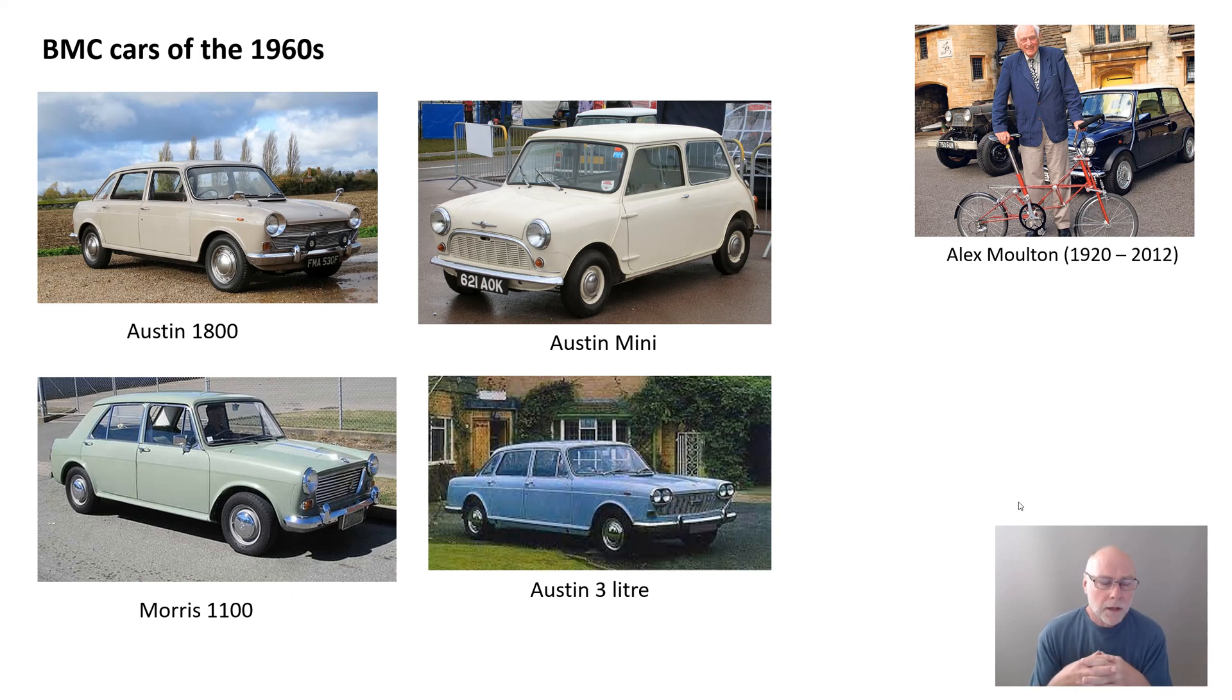The British Motor Corporation cars of the 1960s: the Austin 1800, the Austin Mini in its wet mode, the Morris 1100, and even the Austin 3-litre. This car down the bottom right, a relatively rare car, which also had self-leveling built in, something I touch on in the book.